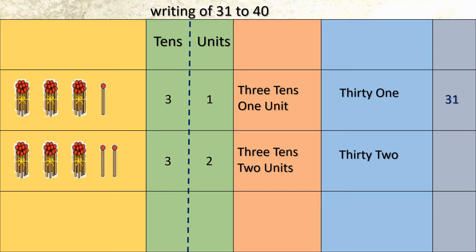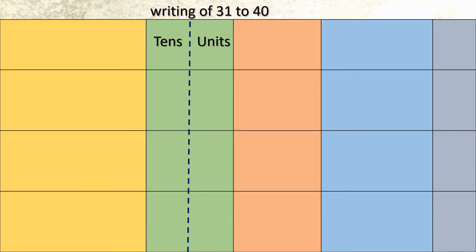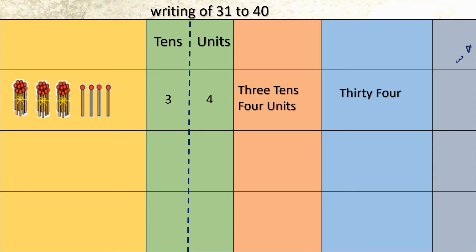We will add one more stick to get 3 tens and 3 units — number formed is 33, numeral 30 and 3. Here you can see 3 tens and 4 units — let us write 3 tens and 4 units; number is 34, and in numerals 30 and 4.